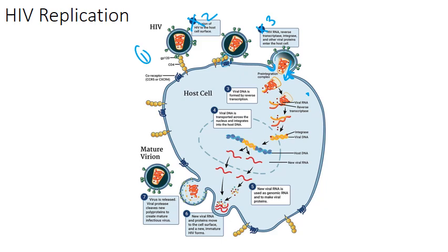Reverse transcription largely occurs in the cell's cytoplasm. During reverse transcription, the RT — the reverse transcriptase — which is encoded by the pol gene in the HIV genome, uses tRNA in the virion as a primer and synthesizes a complementary negative-stranded DNA, essentially cDNA. It also degrades the positive-sense RNA strand and synthesizes the corresponding positive-sense DNA strand. So we go from viral RNA, through reverse transcriptase, to a double-stranded viral DNA.